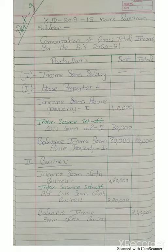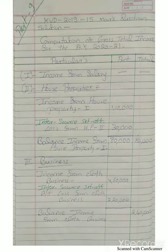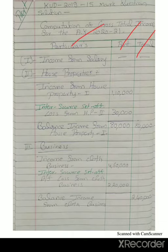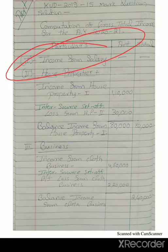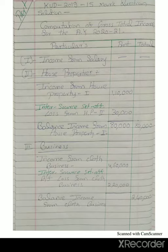Computation of gross total income for assessment year 2020-21. The table has three columns: Particular, Amount, and Total. The first head is income from salary — there is no information regarding income from salary, so we leave it.